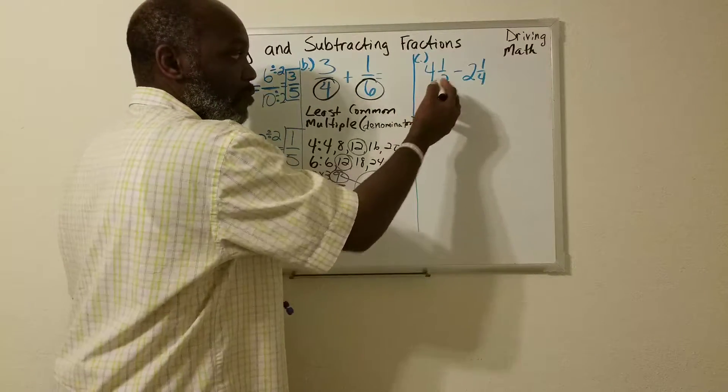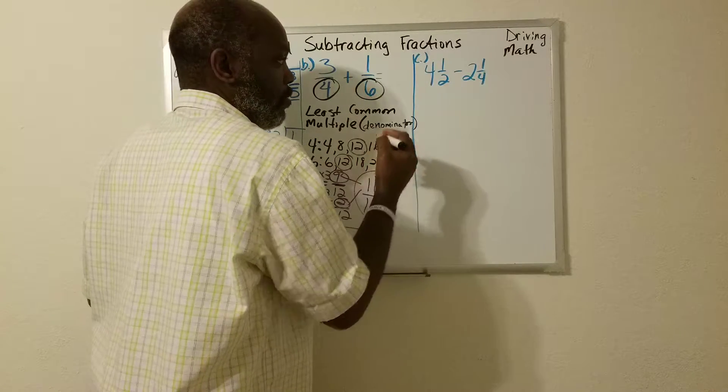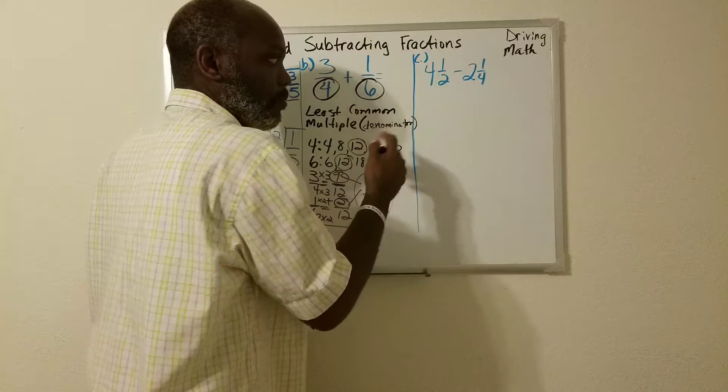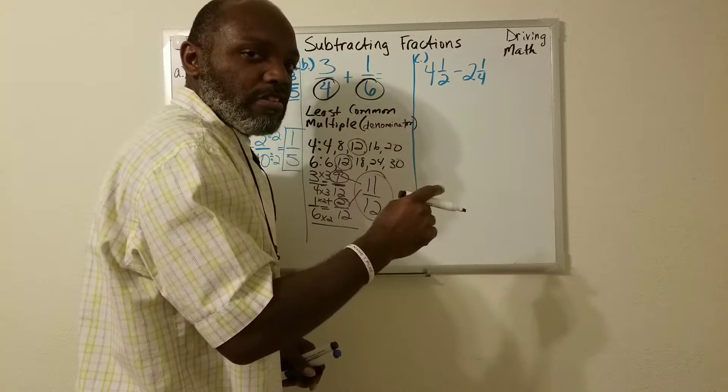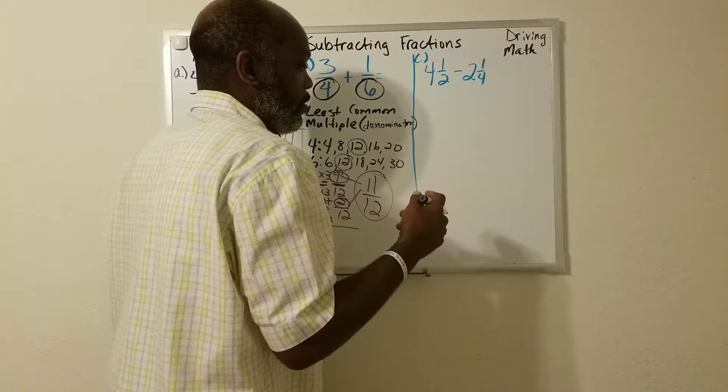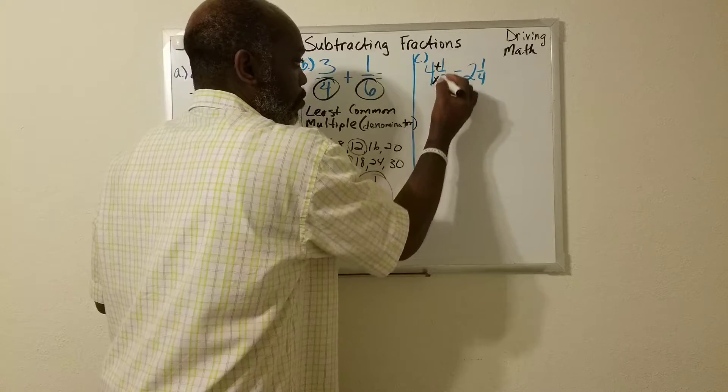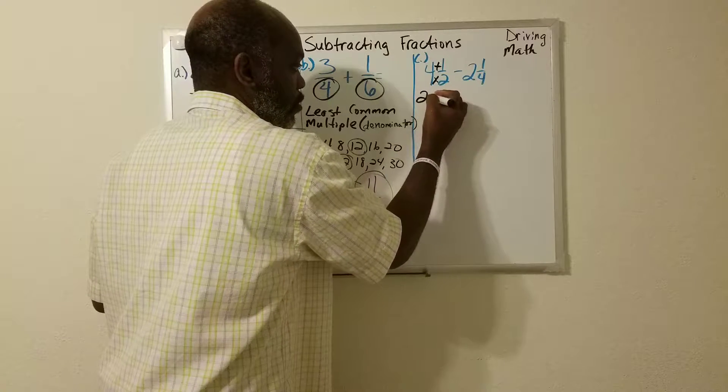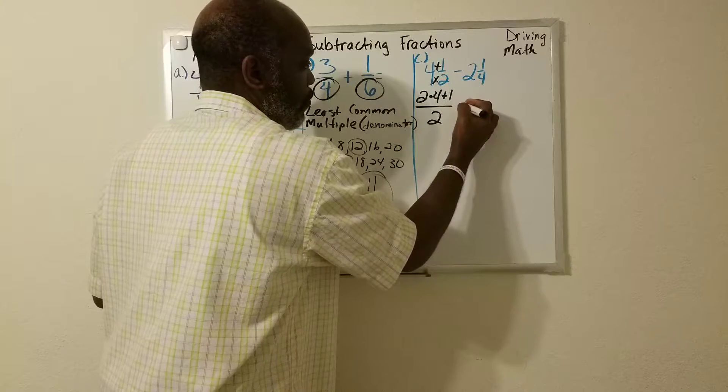All right. So now we have a mixed number subtracted from another mixed number. Now there are two ways you can do this, but I'm going to do one that will work every time. So I'm going to do what I've done before. I'm going to change the mixed number into an improper fraction.